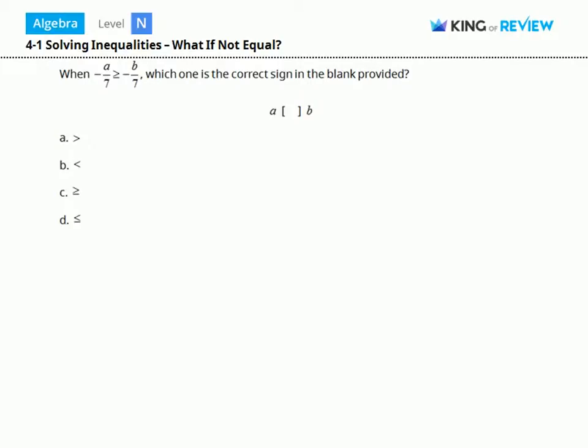So we're comparing a and b. We have our original inequality here. Negative a over 7 is greater than or equal to negative b over 7. So since they're both being divided by 7,